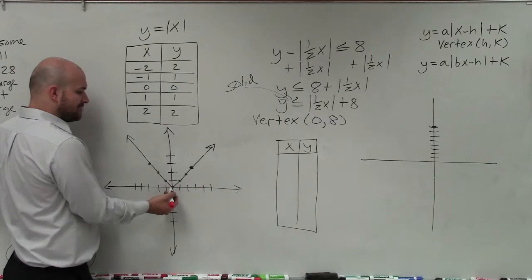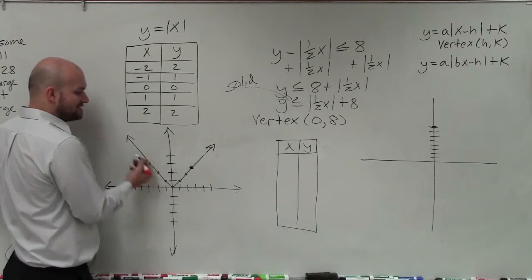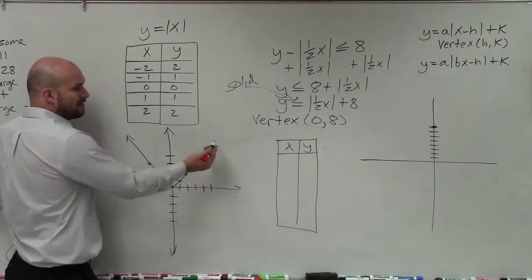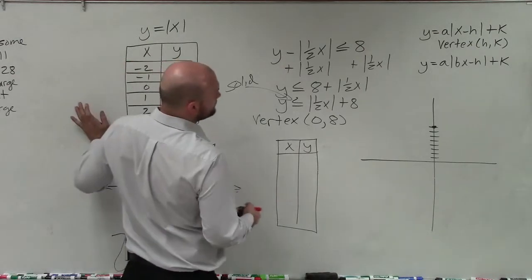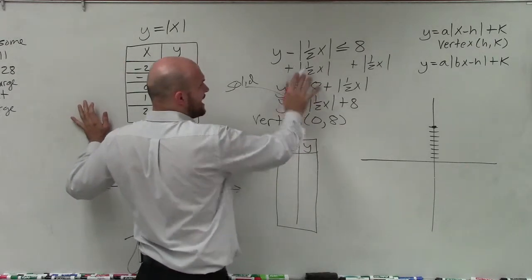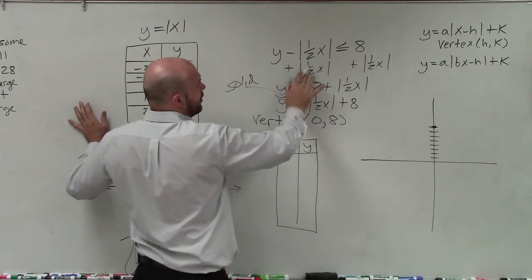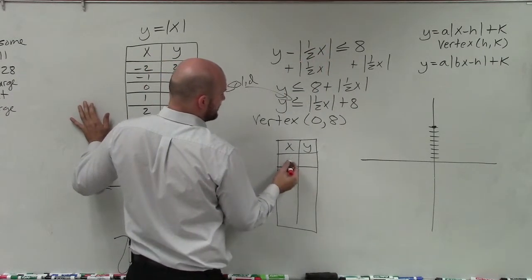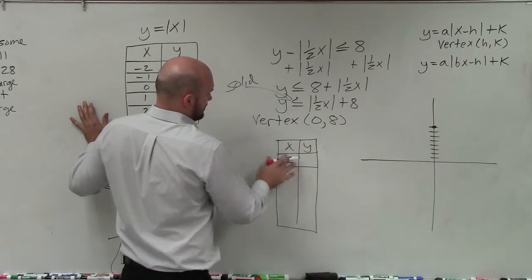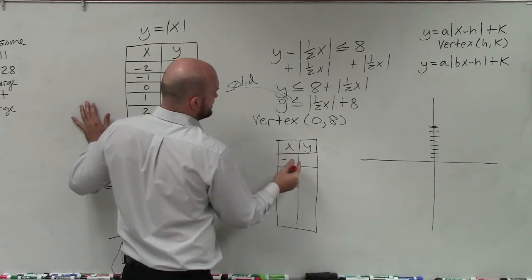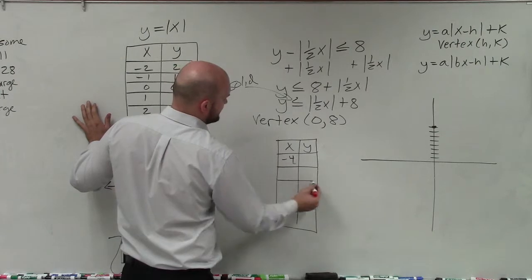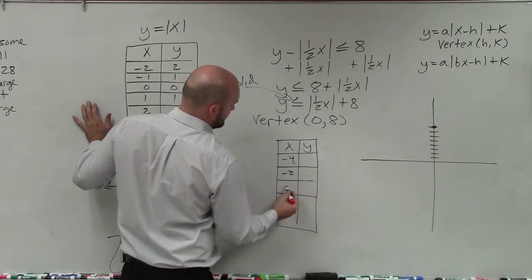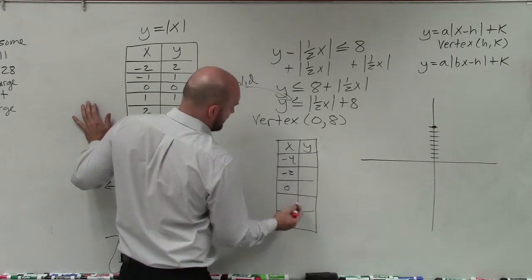All I really need to do is pick two points. Any points I pick to one side, I can reflect and re-graph them to the right. Since my inequality has this 1½ in here, I'm going to choose values that are going to be very simple or very easy to simplify by multiplying by 1½.